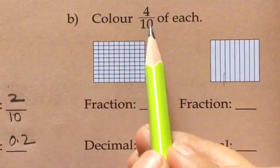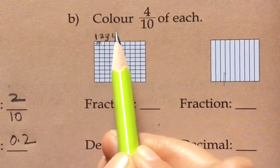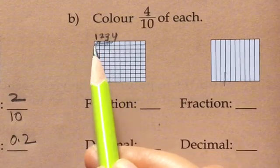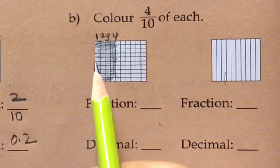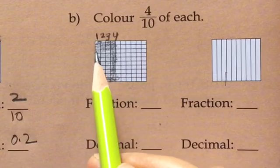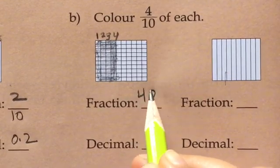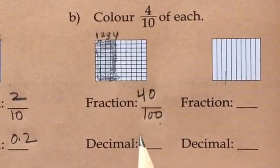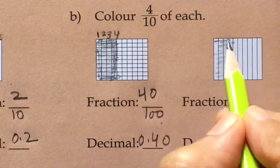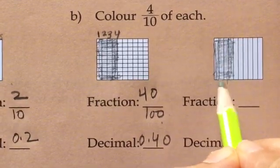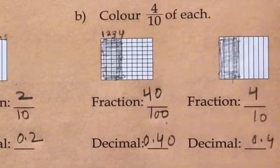Now the another question 4 by 10. So these are 10 boxes, out of them we have to colour 4, 1, 2, 3 and 4. So I am going to colour all them like this, 1, 2, 3 and 4. So how many I have coloured? So these are 10 also. So 40 boxes I have coloured out of 100. So the fraction will be 0.40. Same way here, 4 are being coloured. So it is 4 upon 10, so 0.4. This is our answer.